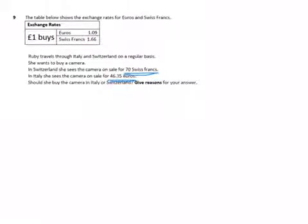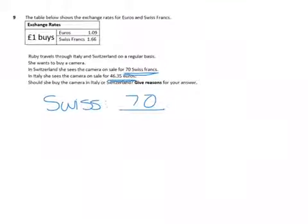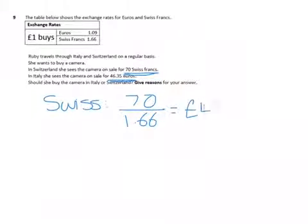That way we can see which one is more expensive. If we first look at the Swiss one, 70 Swiss francs — we're going to need to divide by 1.66 to find the cost in pounds. That comes out to be 42 pounds and 17 pence.